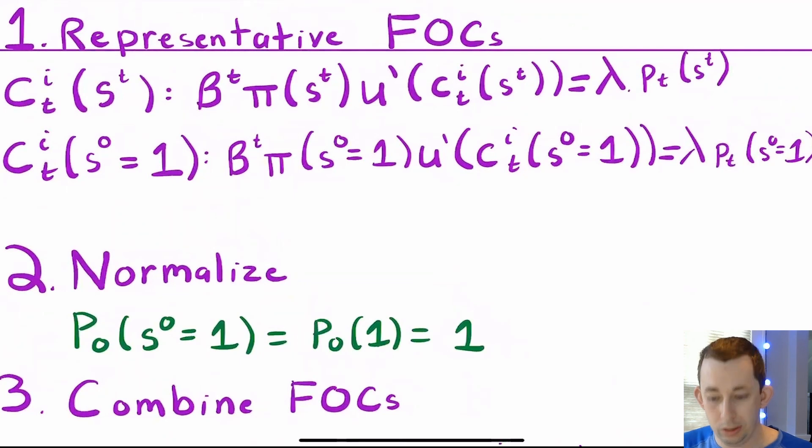So here are our representative first order conditions. I'm just following the standard steps to take a first order condition of that infinite sum. So again, it's a first order condition for a given person in a given time period for a given event history. We've got our lambdas. Notice we only have one budget constraint. So this is not lambda_t or lambda_t of s superscript t. It's just one lambda.